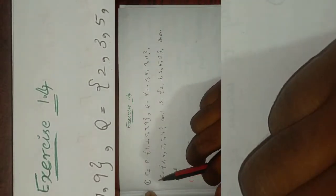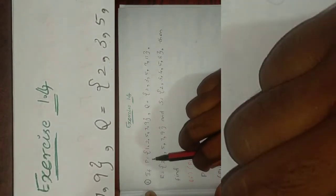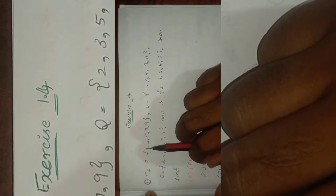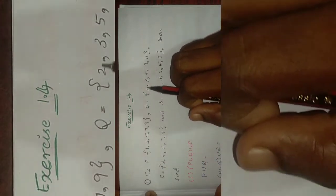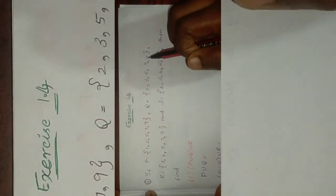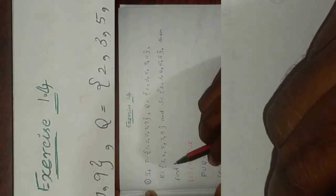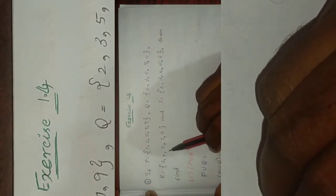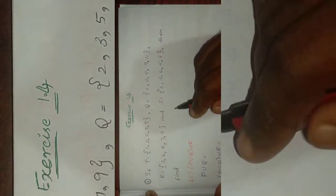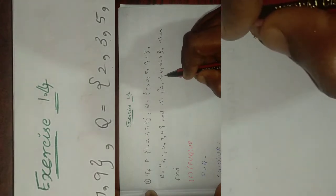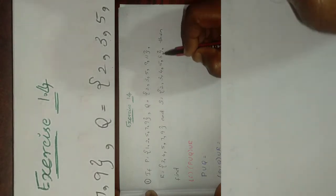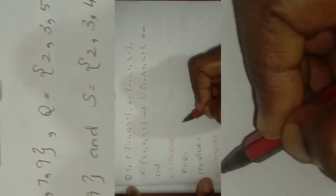Question 1.4: If P equals the set {1, 2, 5, 7, 9} and Q equals the set {2, 3, 5, 9, 11}, R equals the set {3, 4, 5, 7, 9}, and S equals the set {2, 3, 4, 5, 8}, then find P union Q union R.